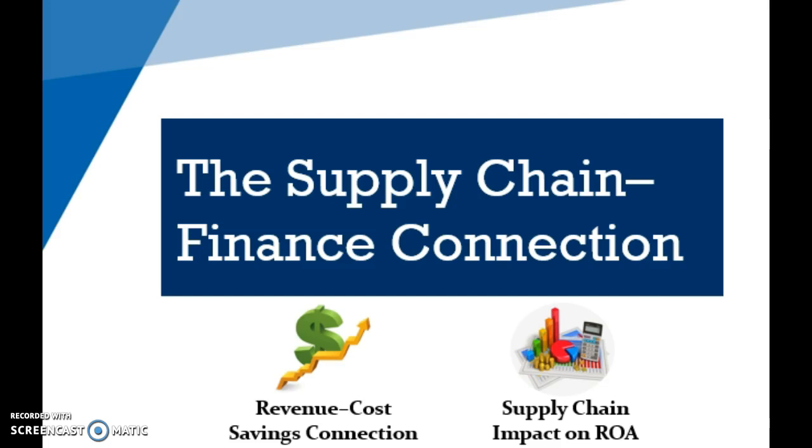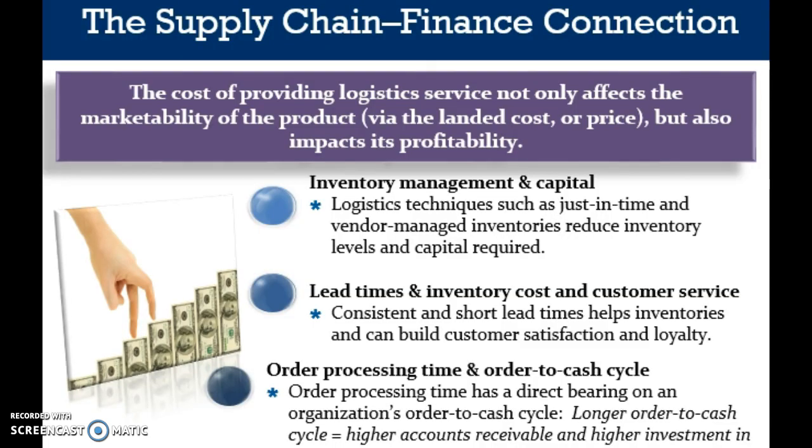Let's look at the supply chain finance connection. Management must view supply chain alternatives as to their ability to optimize the corporate goal of profit maximization. Some alternatives might minimize costs but reduce revenue and possibly profits. By implementing supply chain alternatives that optimize profits, the decision maker is taking the systems approach and trading off revenue and costs for optimal profits. Efficiency of the supply chain impacts the time required to process a customer's order. Order processing time has a direct bearing on an organization's order-to-cash cycle. Typically, the invoice is sent to the customer after the order is shipped. The longer the order-to-cash cycle, the longer it takes for the seller to get its payment, the higher the accounts receivable, and the higher the investment in finished goods — directly relating to the amount of capital tied up and not available for other investments.